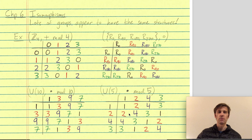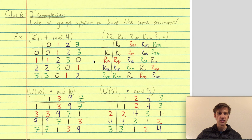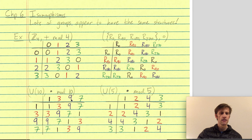Finally, we have the units mod 5 — the numbers relatively prime to 5, which are all of them: 1, 2, 3, and 4 — with operation multiplication mod 5. You can confirm these Cayley tables are correct yourself. For example, 2 plus 3 equals 5, which mod 4 is 1. Rotating by 180 then 270 degrees gives a full circle plus 90 more. Multiplying 9 by 7 gives 63, which mod 10 is 3. And 4 times 3 is 12, which mod 5 is 2.